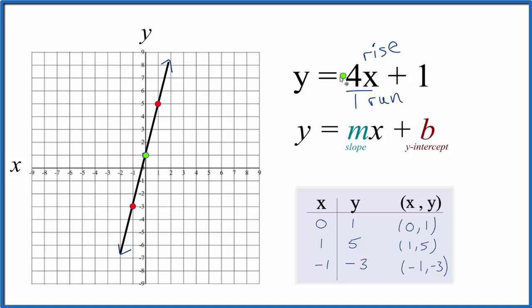So we'll go up 4—1, 2, 3, 4—that's the rise, and then run 1. From our y-intercept, we go 1, 2, 3, 4 up, then over 1. We could do it again: up 1, 2, 3, 4, and over 1.